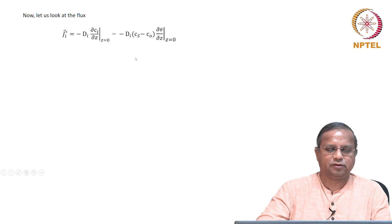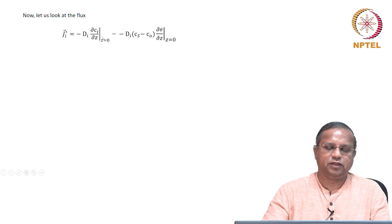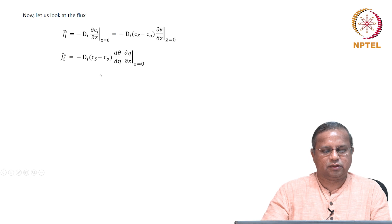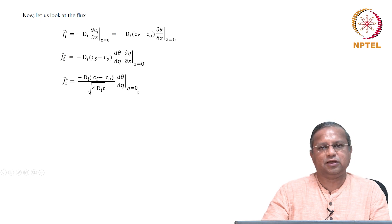Now let us look at the flux, which is what we need. The flux is purely diffusive since there is no motion of the liquid, so we use Fick's first law: jᵢ* equals minus Dᵢ (∂cᵢ/∂z) at z equals 0. In terms of θ and η, this becomes minus Dᵢ(cₛ − c₀) times (dθ/dη)(∂η/∂z) at z equals 0, giving Dᵢ* equals Dᵢ(cₛ − c₀) times (1/√(4Dᵢt)) times (dθ/dη) at η equals 0.